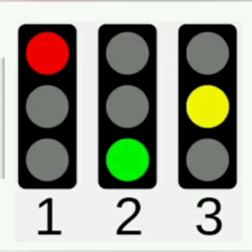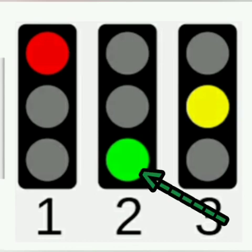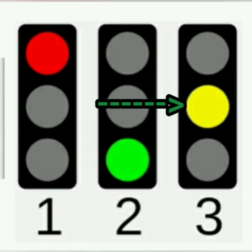The first one is the red color. Red color gives the information to stop the vehicle. This is a very important code. The next one is green color — green means go, move the vehicle. And then the third one is yellow. Yellow is the sign of ready to go. These are the three important signals and their colors give the information.